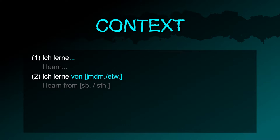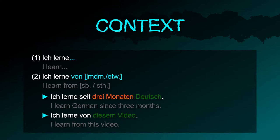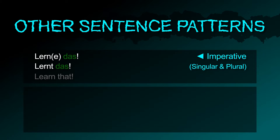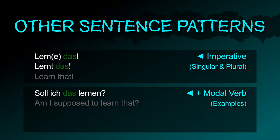In context, simply say what you're learning. If you are learning from somebody or something, you have to use the preposition von. Examples: ich lerne seit drei Monaten Deutsch; ich lerne von diesem Video. Imperative forms: lerne das, lernt das.